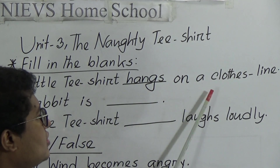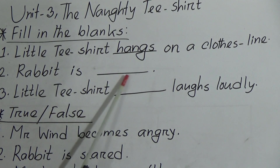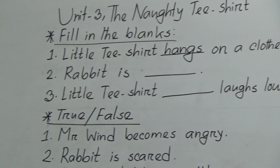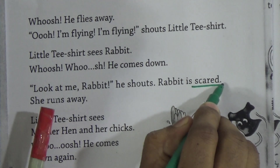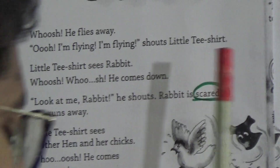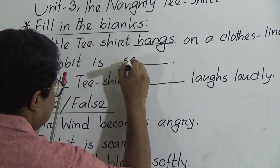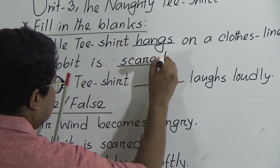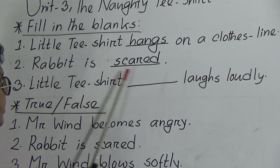So 'hangs' — little t-shirt hangs on a clothesline, the word 'hangs' is the answer. Number two: rabbit is ___. Let's go to the text again. Rabbit — he shouts — rabbit is scared. So in the fill in the blanks the word 'scared' is missing. We will write the answer: scared, S-C-A-R-E-D. Rabbit is scared.